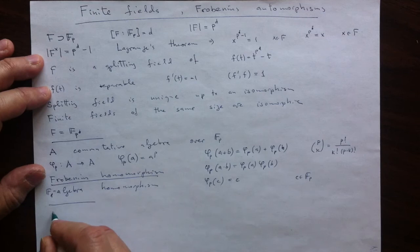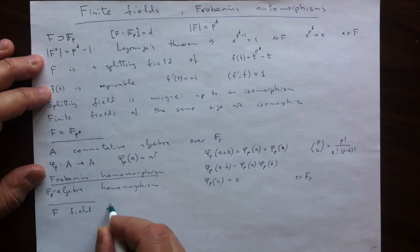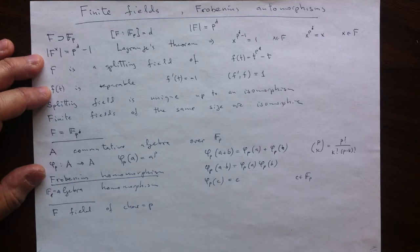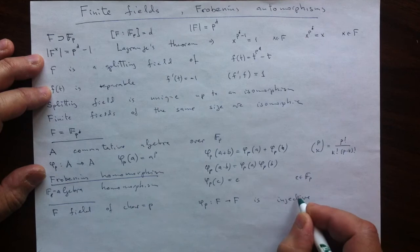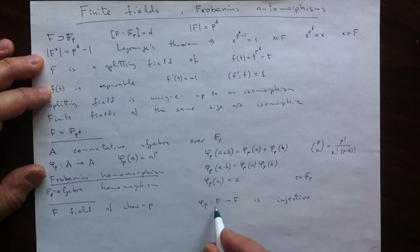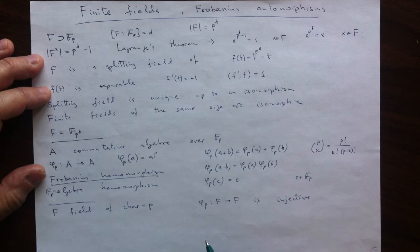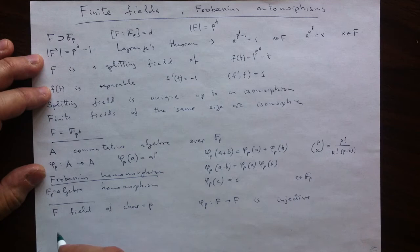Let's apply it to our situation of a field. So if we have a field of characteristic p, meaning that the smallest subfield is the field of p elements, then this Frobenius, which is defined, is injective. Different elements will have to go to different elements. Because the kernel of this homomorphism is an ideal in the field. And the field doesn't have non-trivial ideals. The only ideals F has is 0 and the whole thing. And it cannot be the whole thing because, say, element 1 goes to itself. So it must be that the kernel is 0 and hence we have this injectivity.